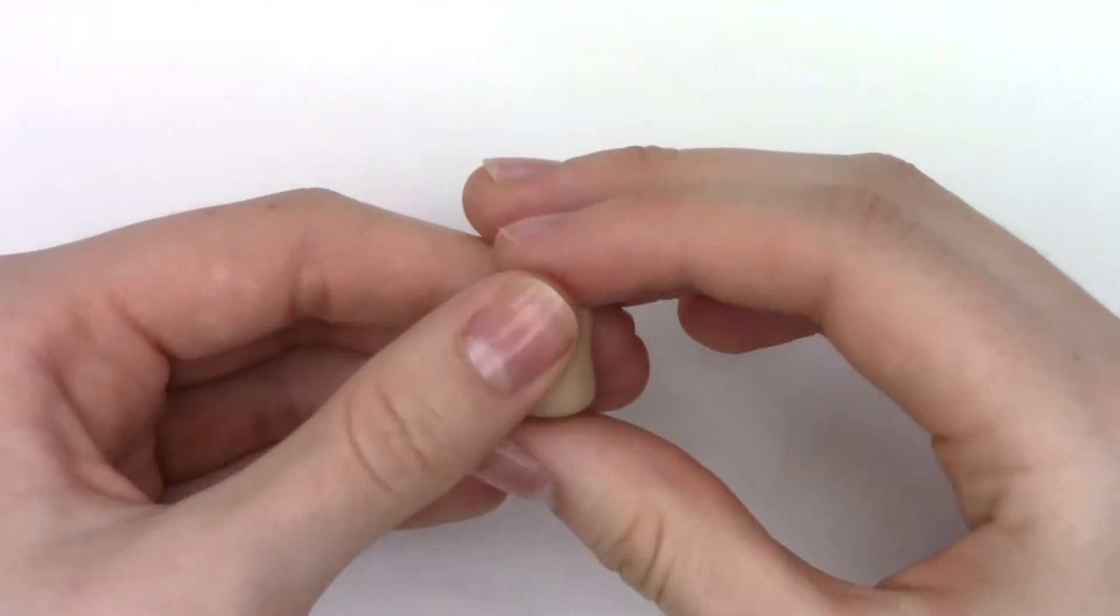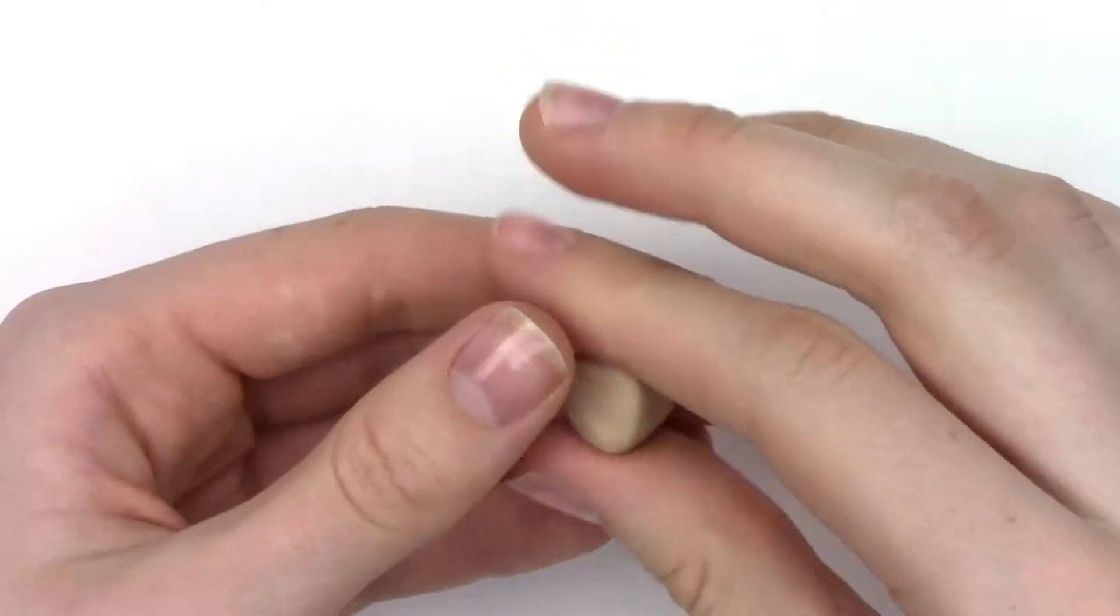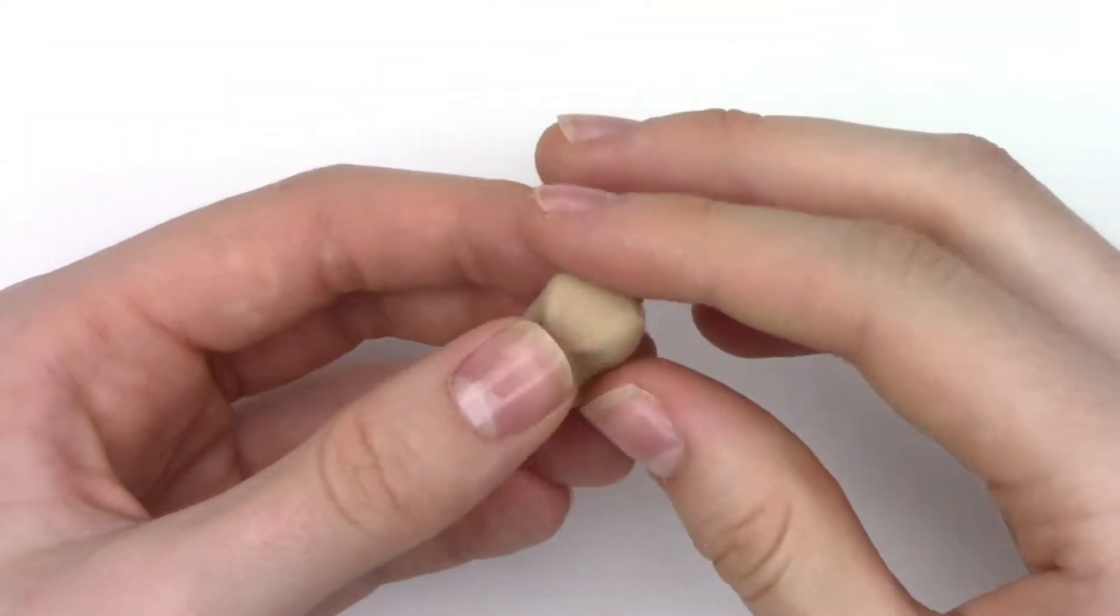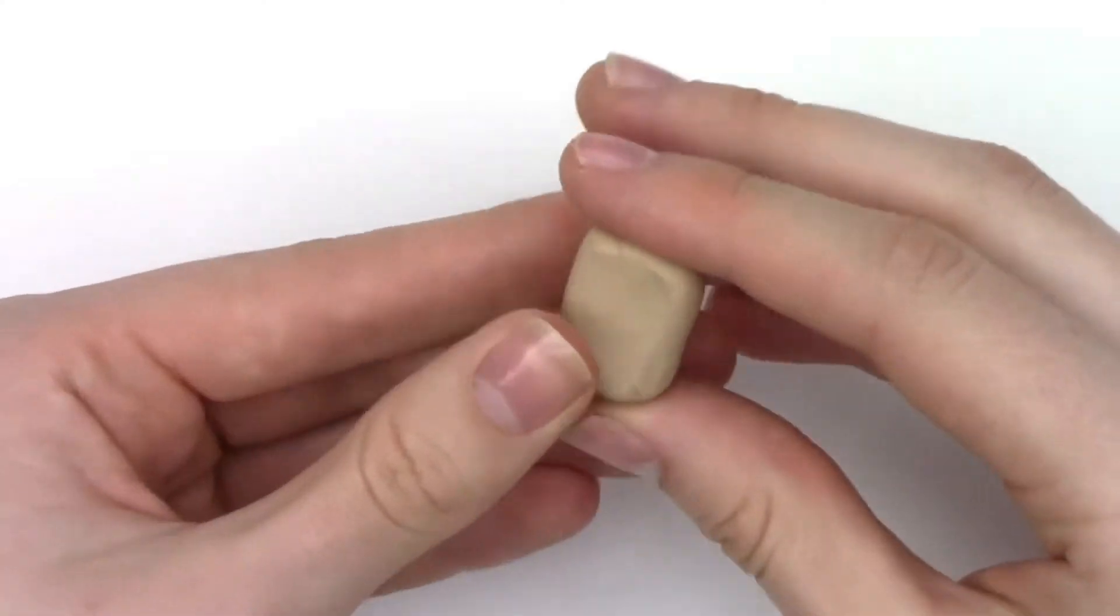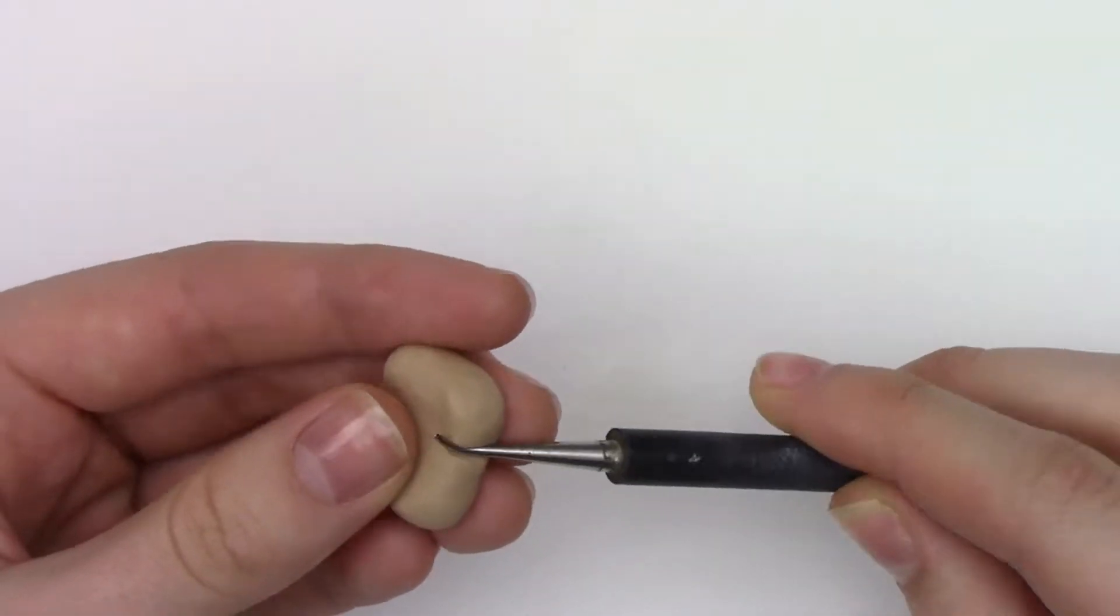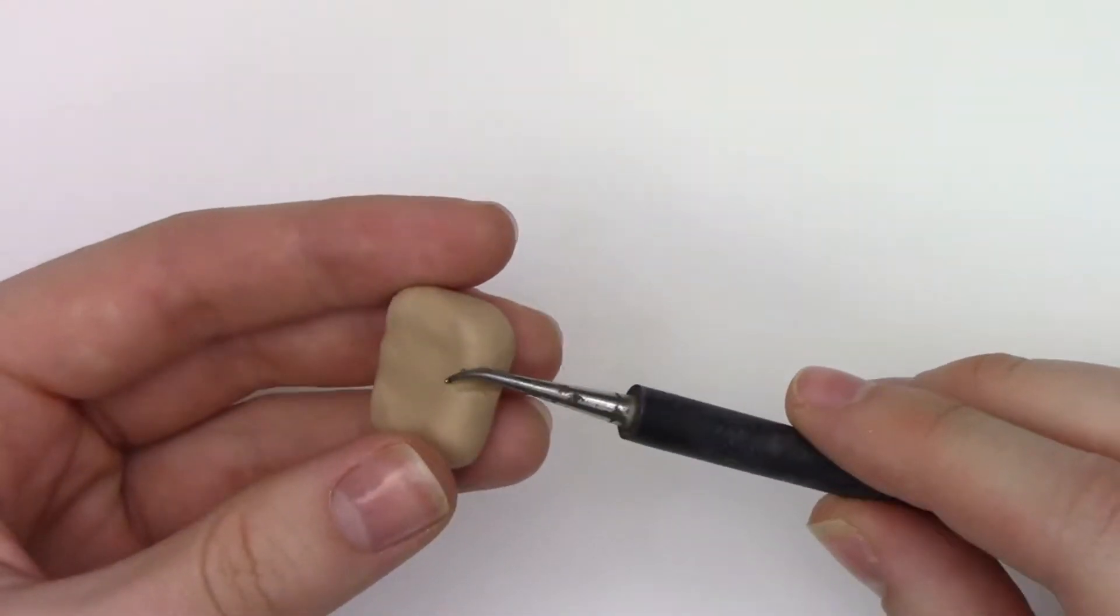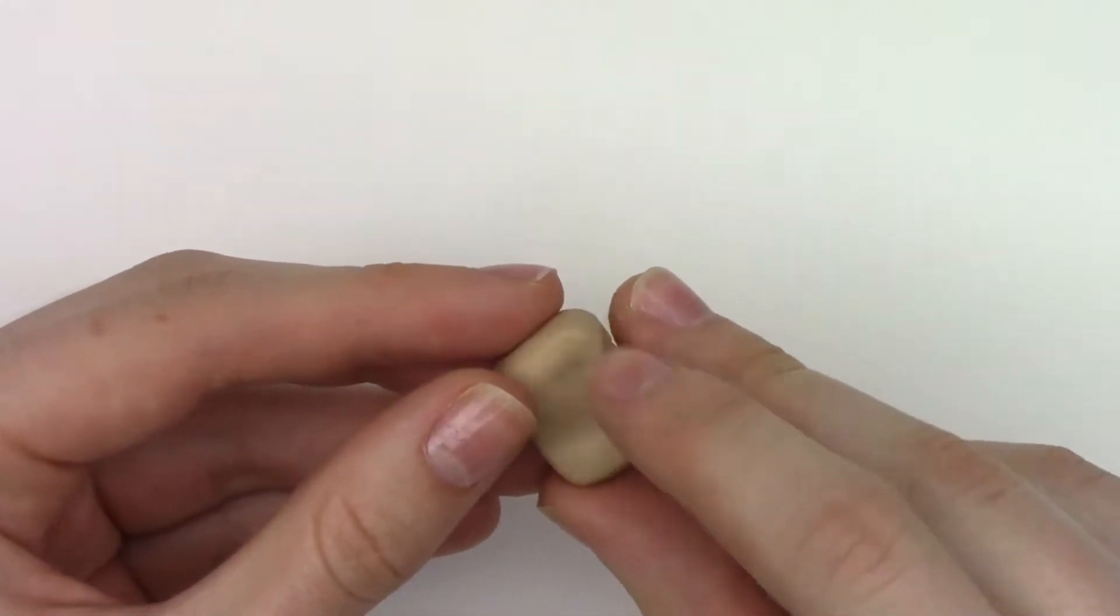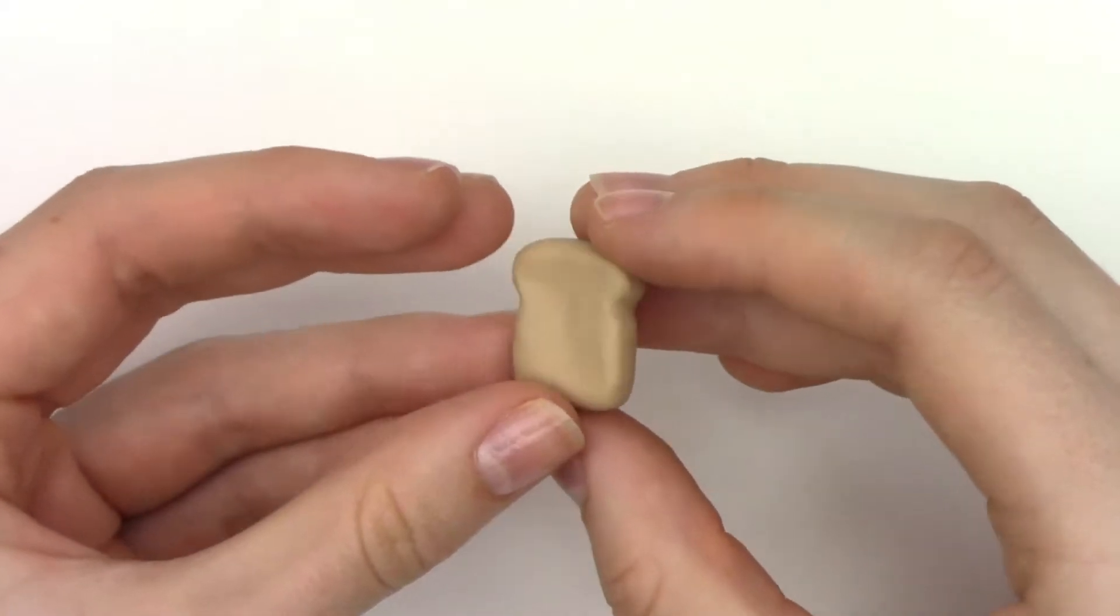And to get started, I'm just taking some craft clay that I found at Walmart and I'm just pressing it and molding it into the shape of a little loaf of bread. I'm taking my clay tool and making two indents on both sides of my clay just to make it look even more like bread, and you can smooth that out with your fingers.